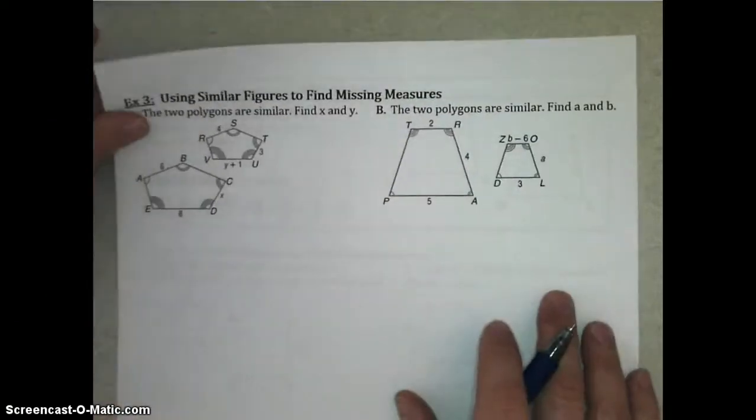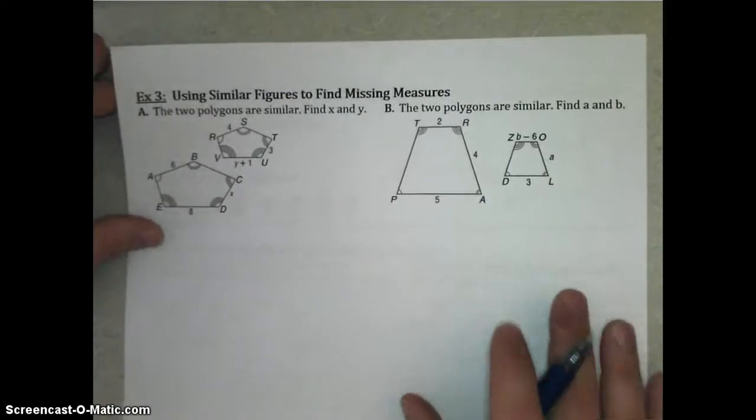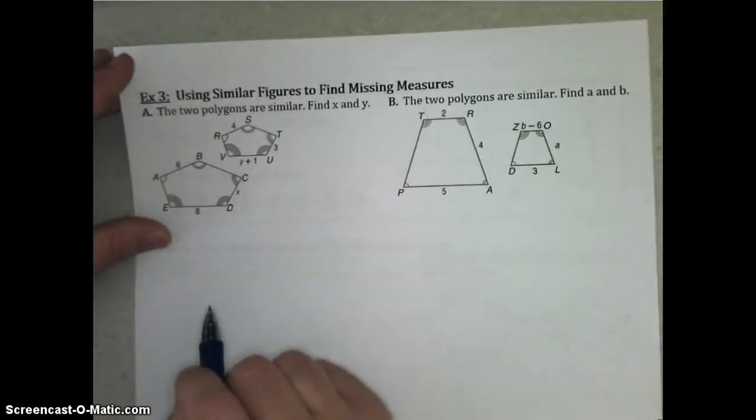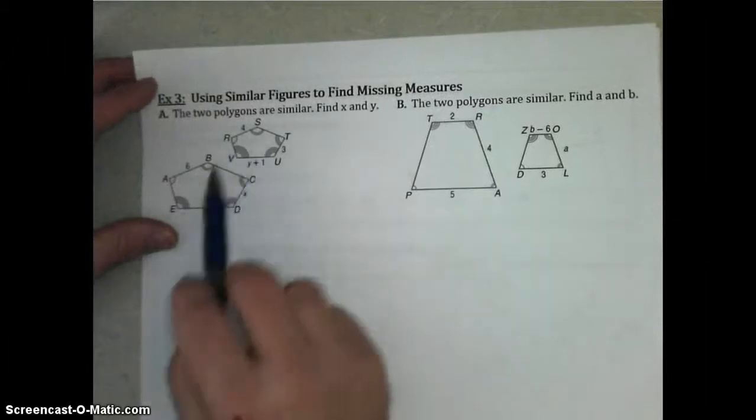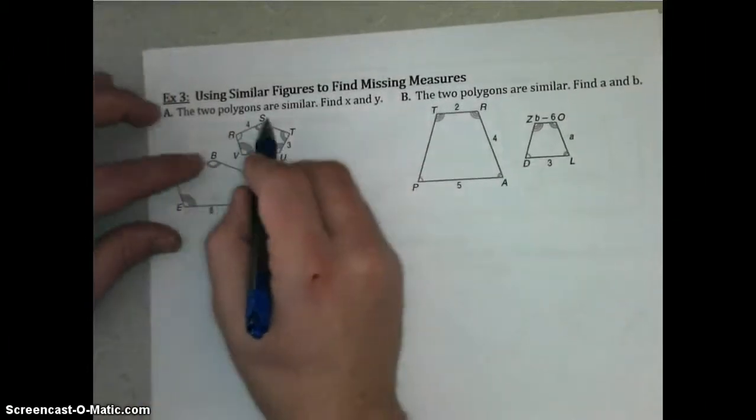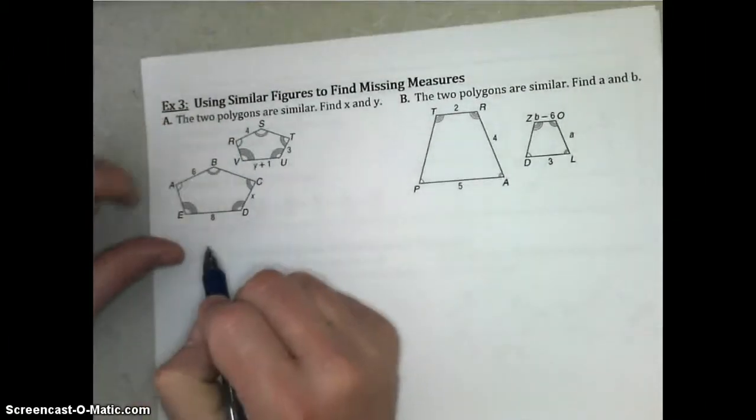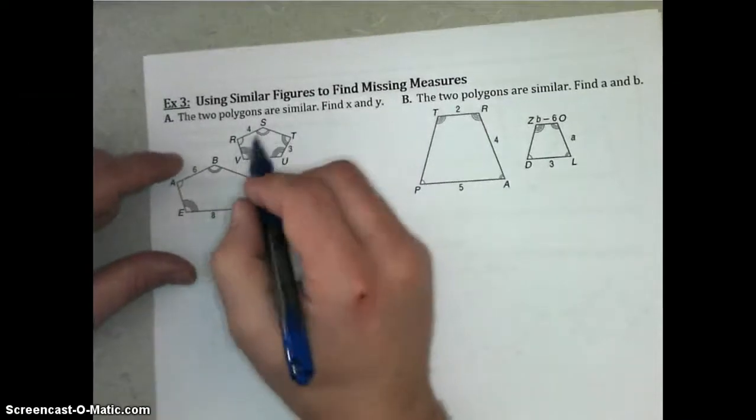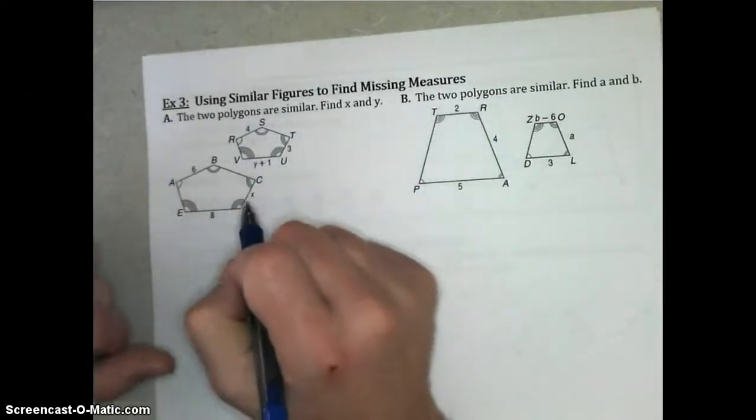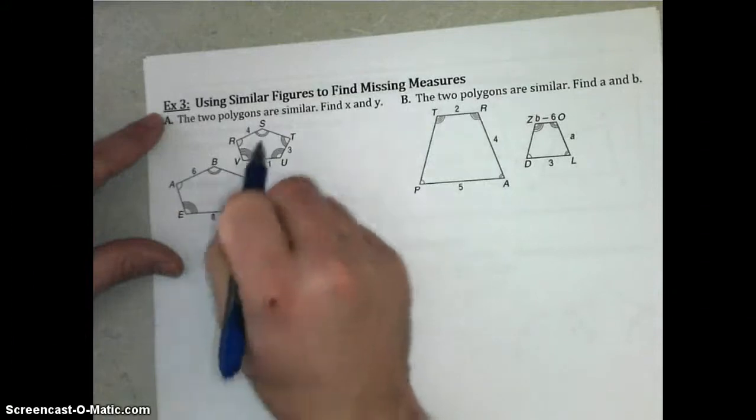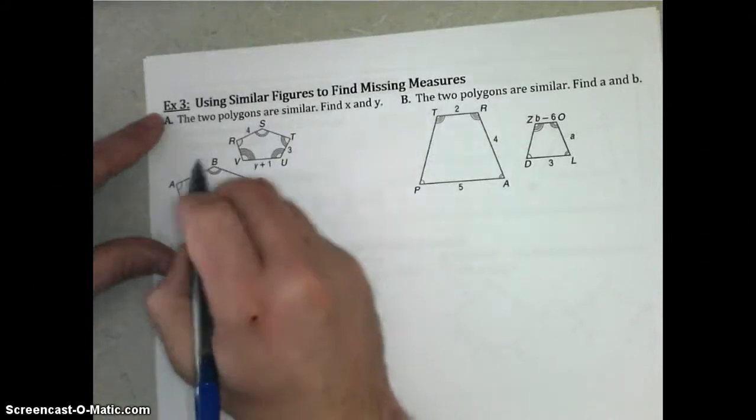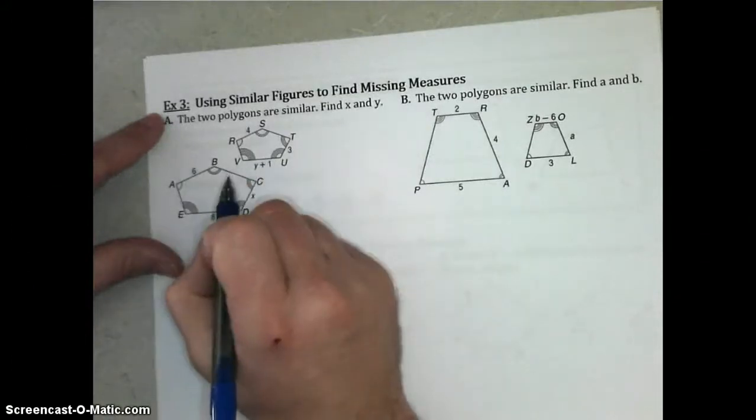And that leads us to example 3. In example 3, we're going to use similarity to find measures in our polygons. So, in example A, we are given these two similar polygons, and we know they're similar because all corresponding angles are congruent, and then we have similarity ratios that we can come up with. So, we're to find X and Y. Since these are similar, all corresponding sides should be proportional.